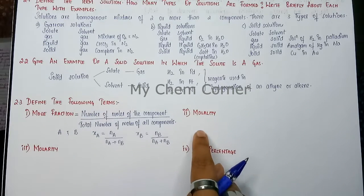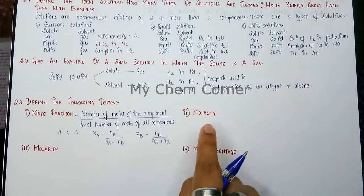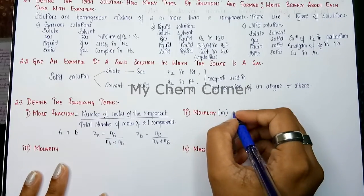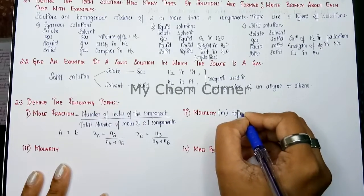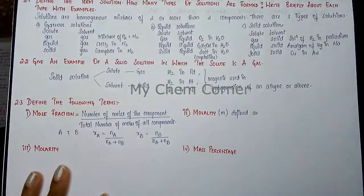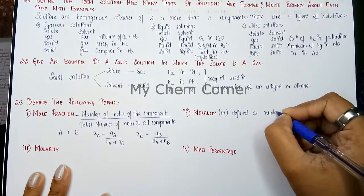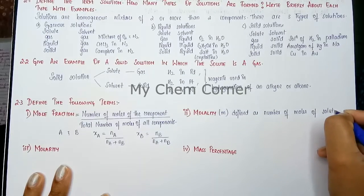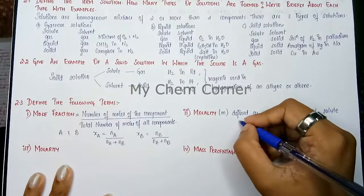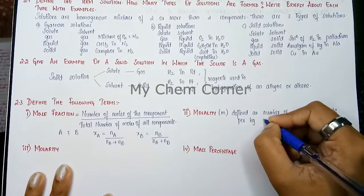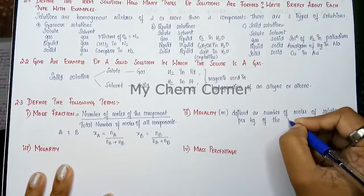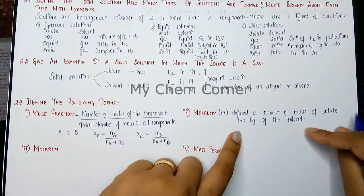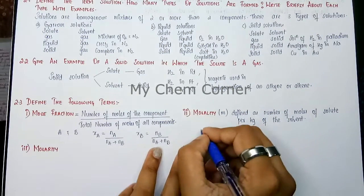The second term is molality. Molality is denoted as small m. Molality is defined as the number of moles of solute per kilogram of solvent. That's the definition for molality — number of moles of solute per kg of solvent.